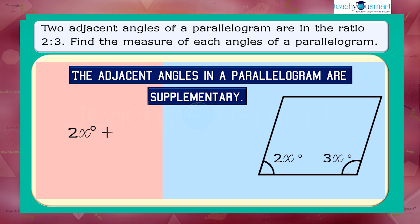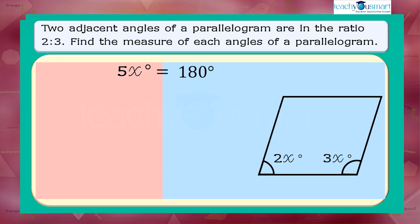2x degrees plus 3x degrees equals 180 degrees. 5x degrees equals 180 degrees. Transposing 5 to RHS.